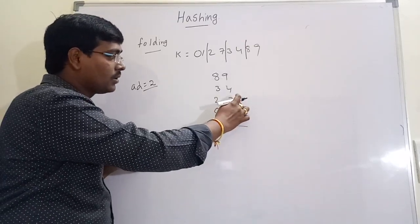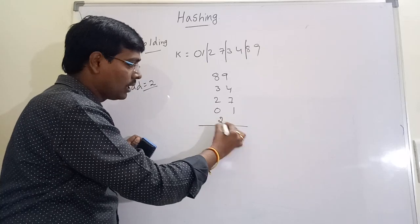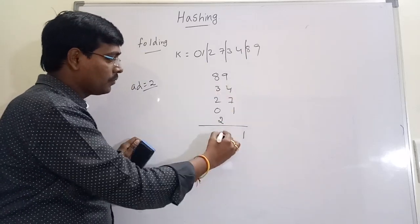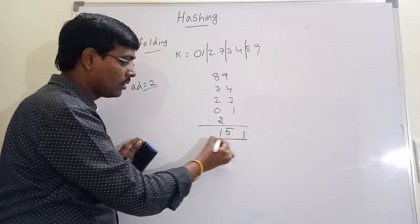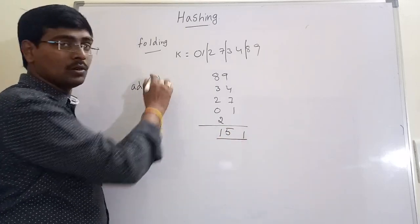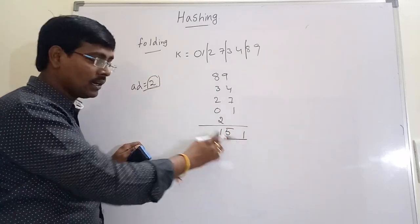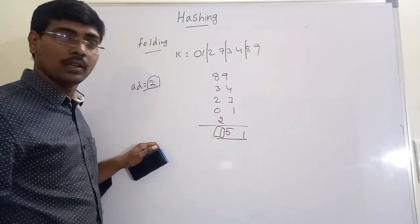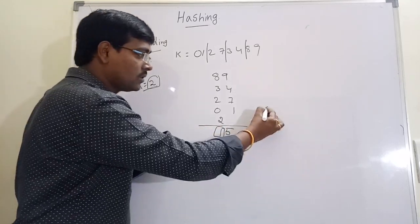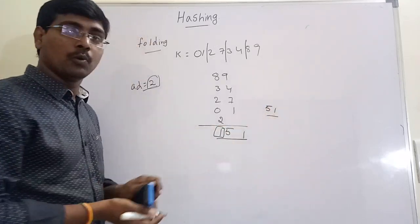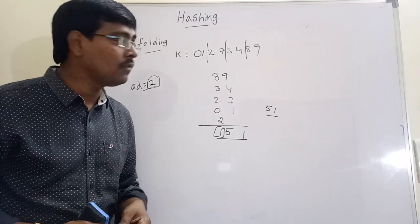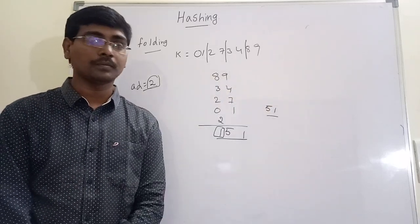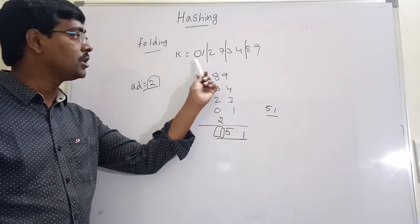Now perform the addition operation on these parts: 89 + 34 + 27 + 01 = 151. If our address width is 2 and we get a three-digit number, we simply ignore the carry — so our answer is 51. At position 51 in the hash table, we are placing this number.